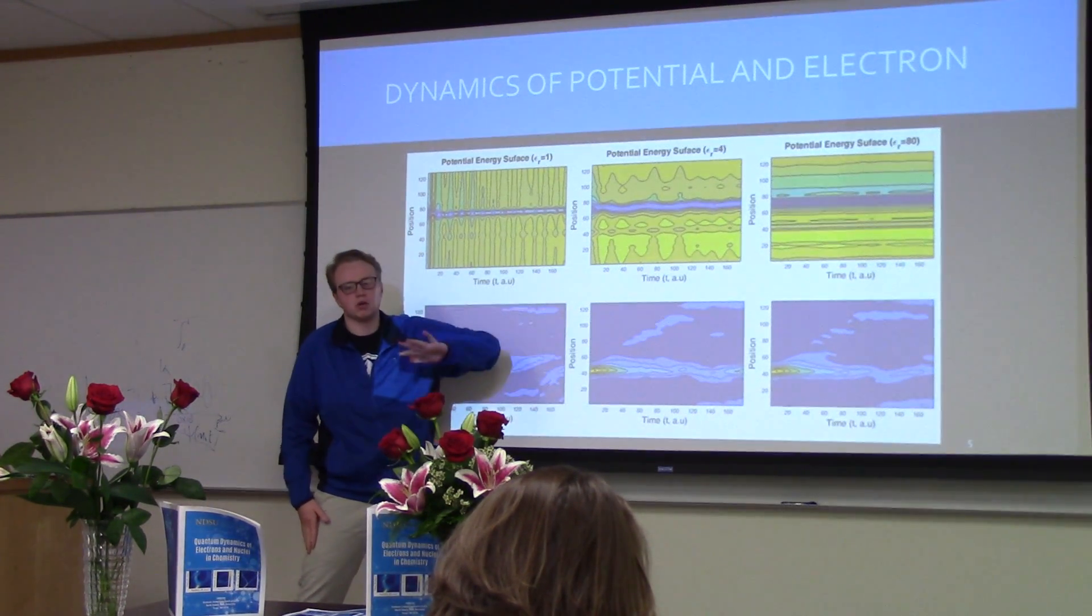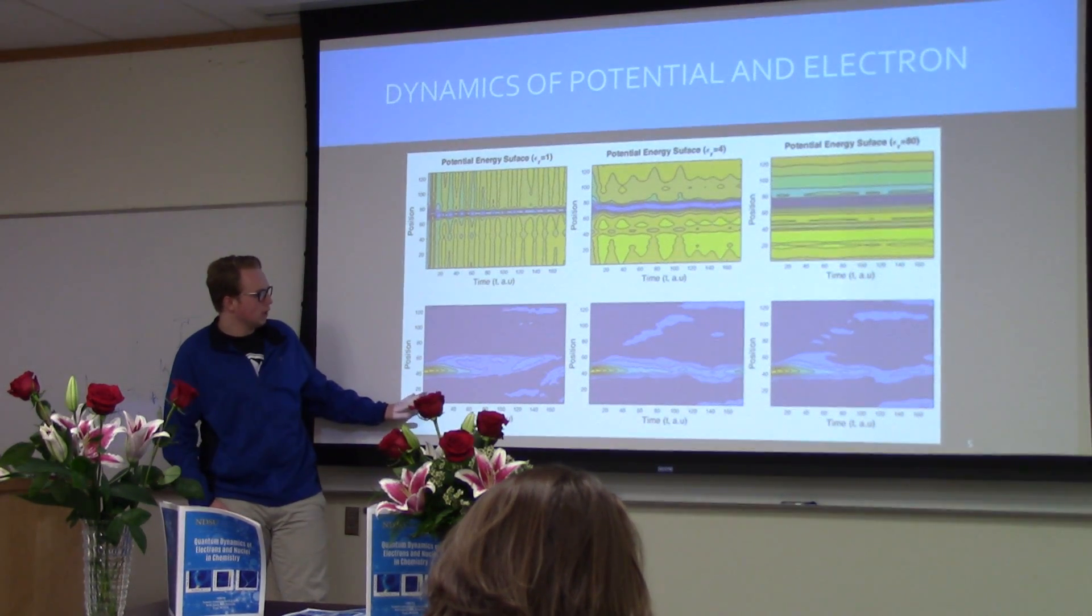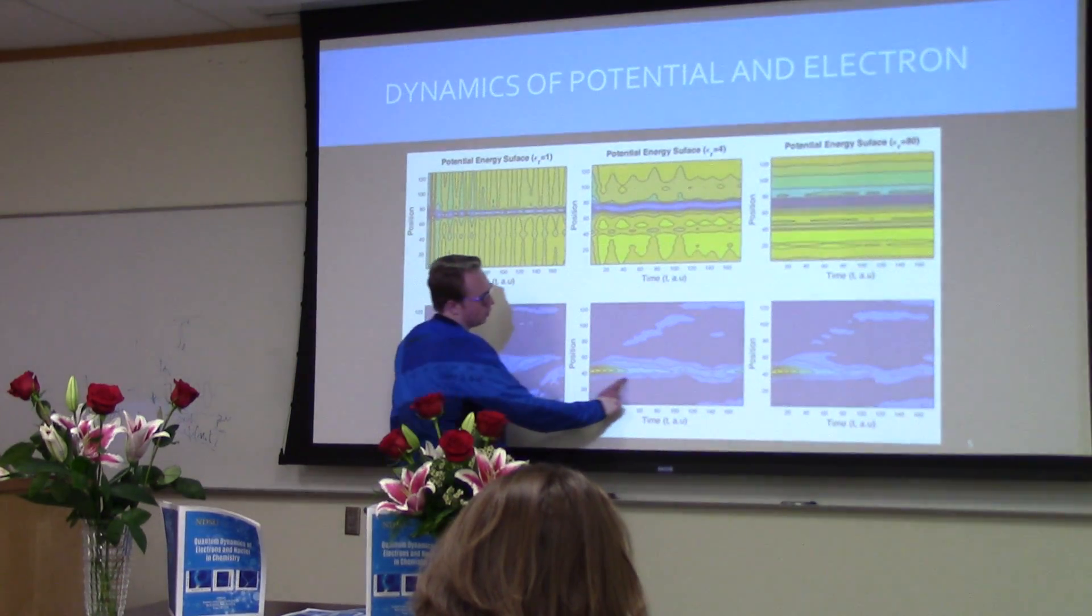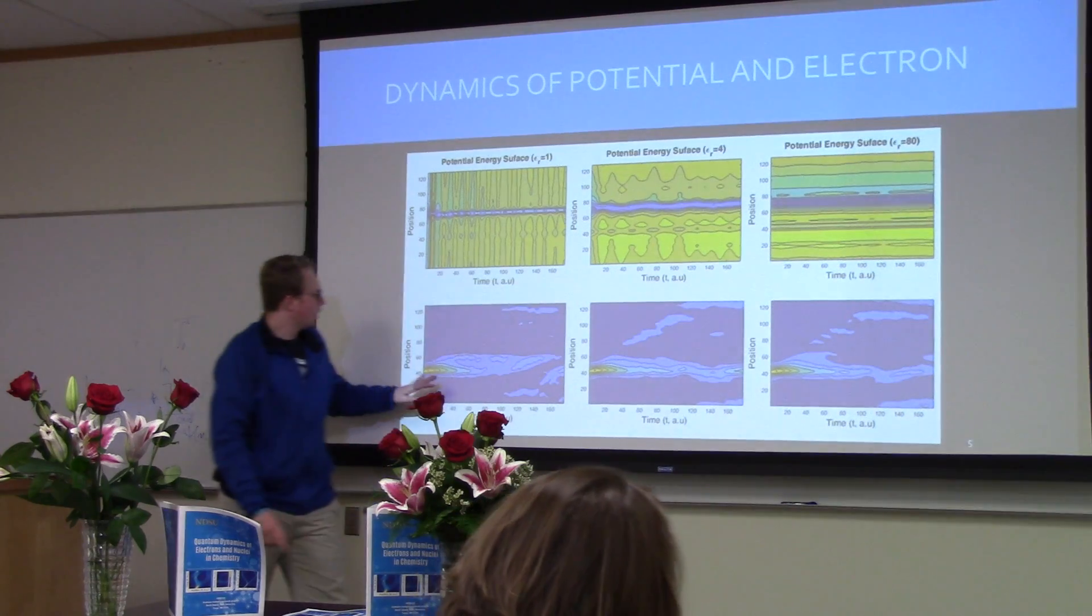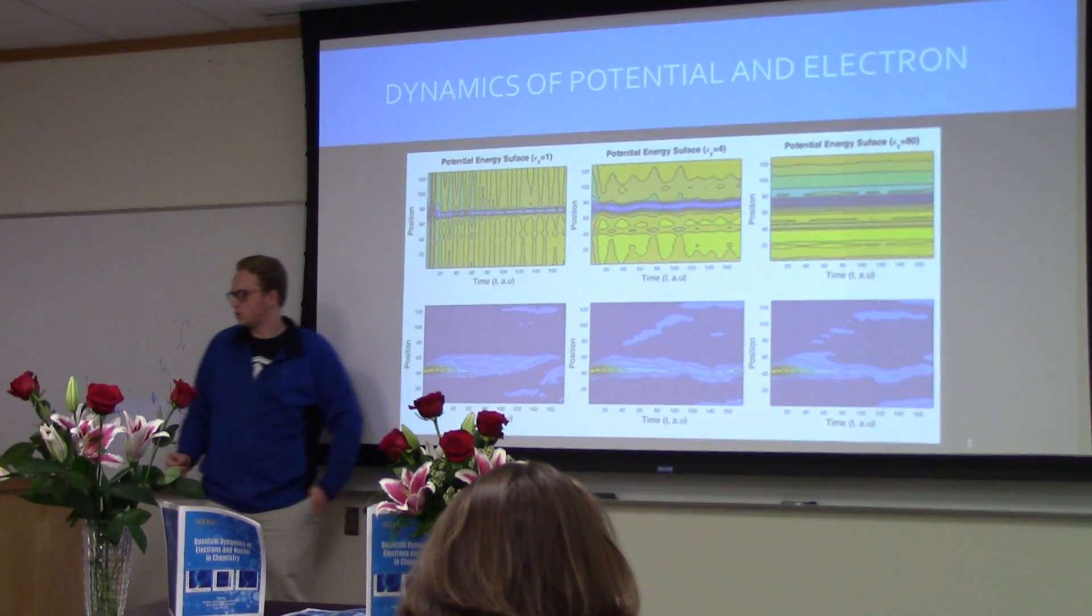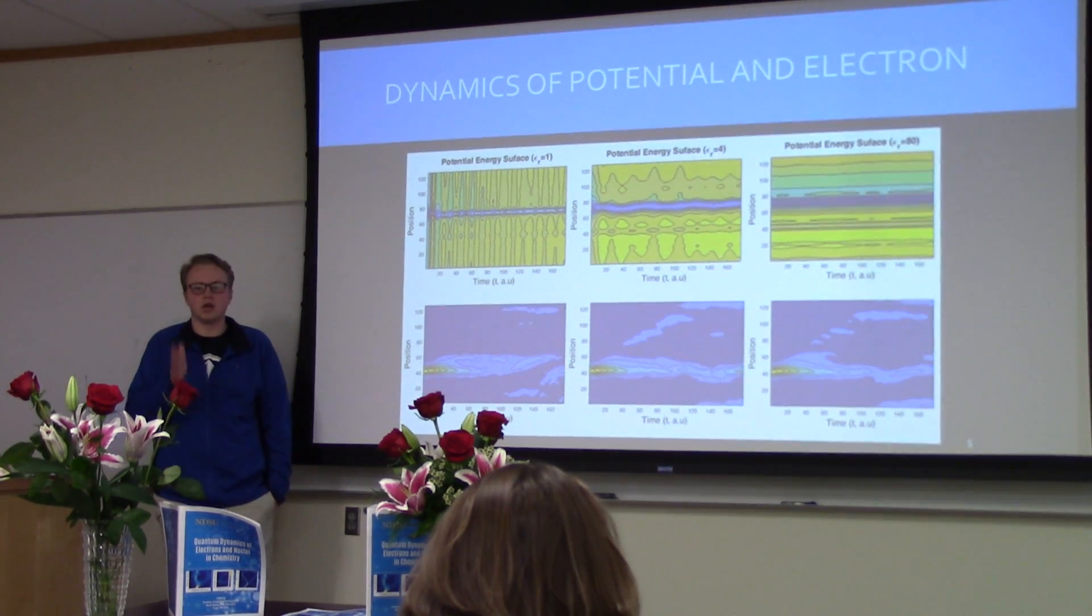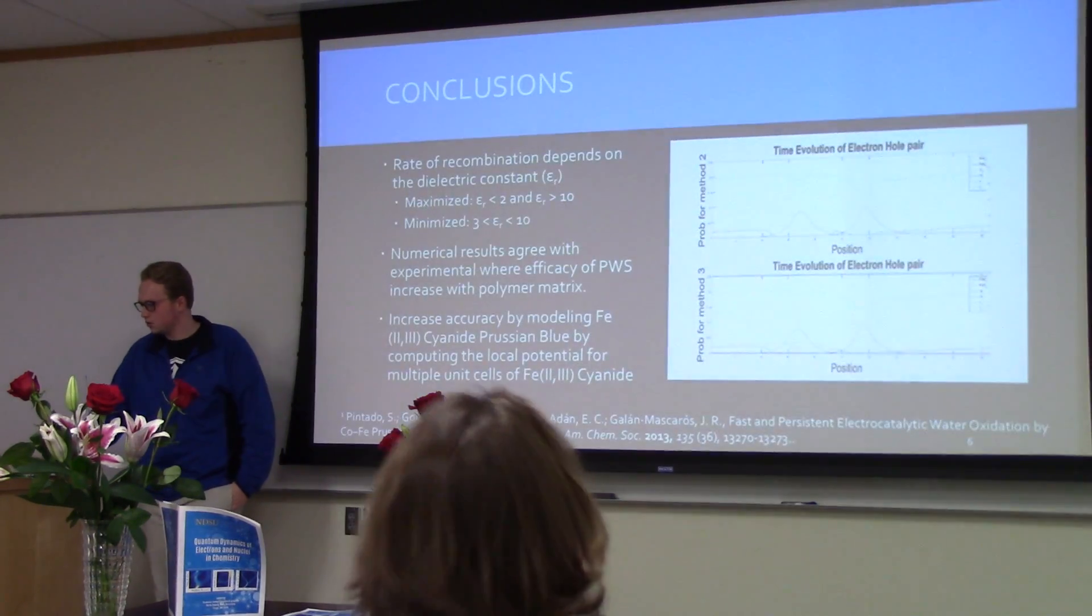When we go to 80 it's pretty much more constant. The electron probability shows that at 4 there is definite localization, whereas at 1 and at 80 it becomes more delocalized. This also supports the idea that the electron is staying on the iron versus recombining.